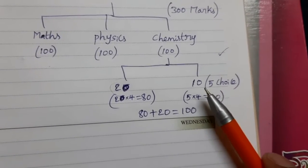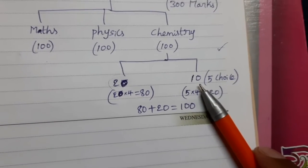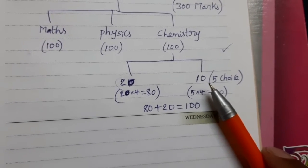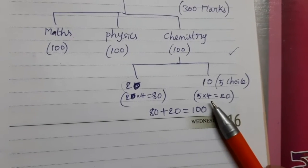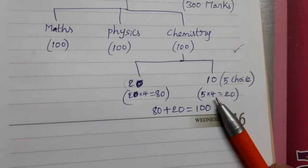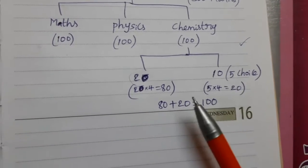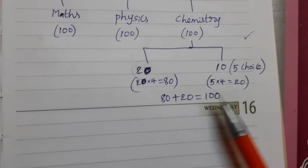Come to another type of questions, 10 questions numerical type questions. In this 5 questions are choice, that means from this 10 students have to attempt only 5. Each question carries 4 marks, 5 into 4, 20 marks. In this no negative marking, so total 80 plus 20 is equal to 100 marks.